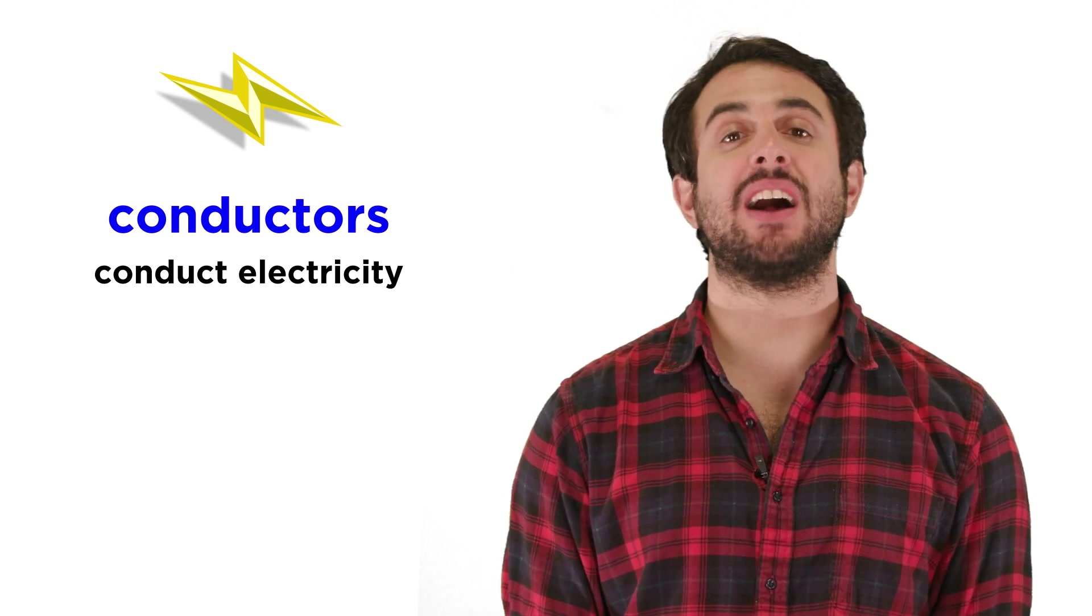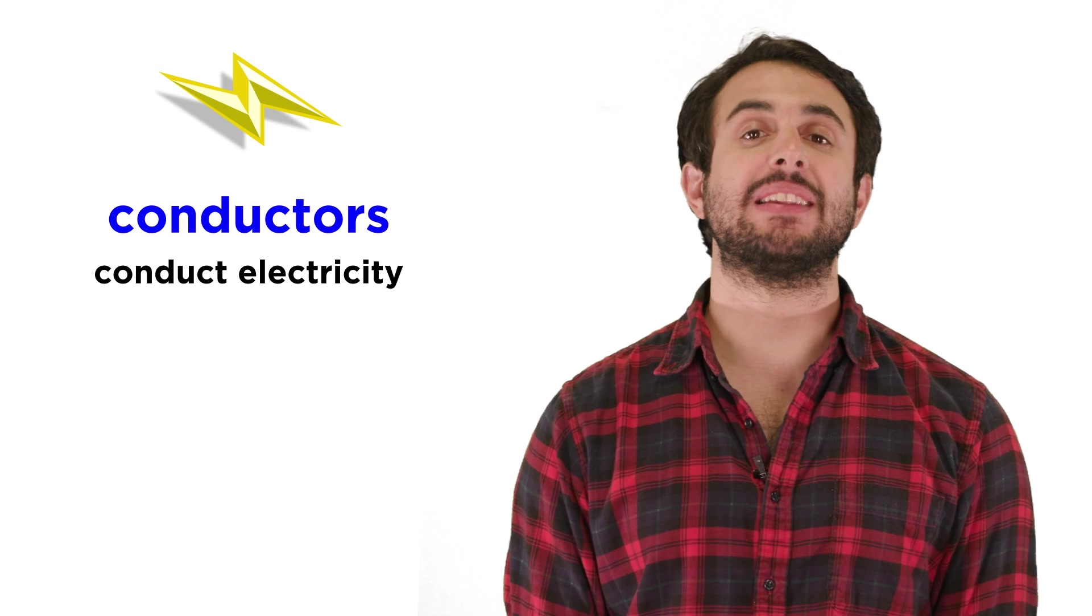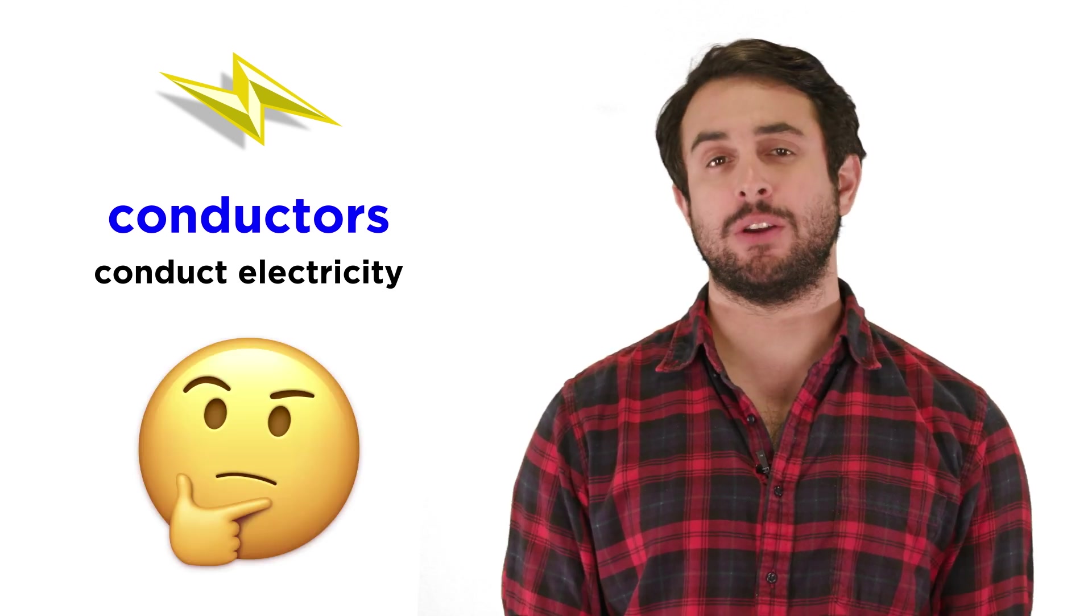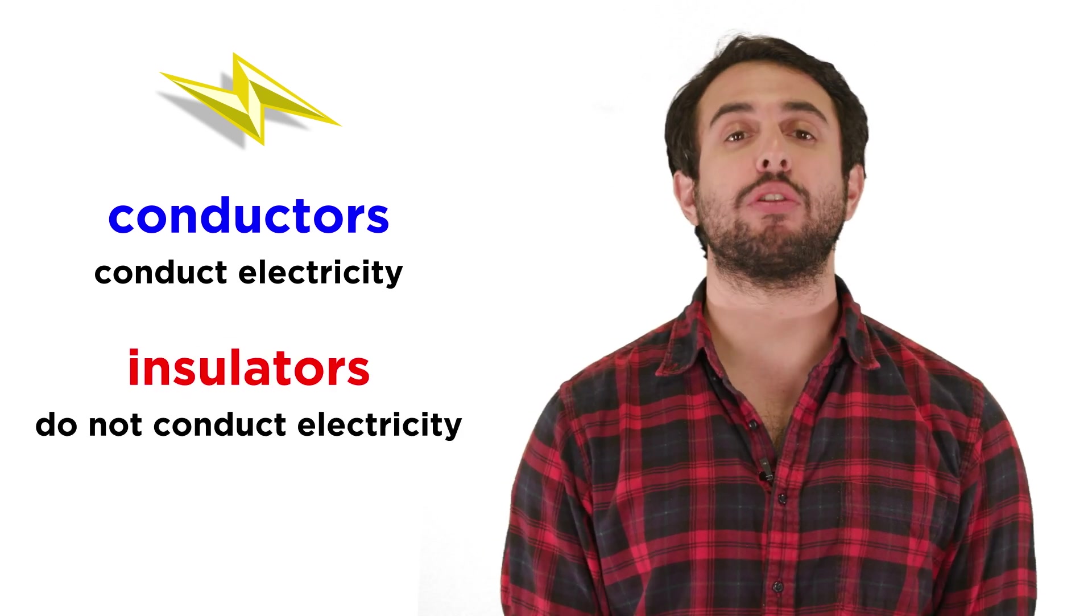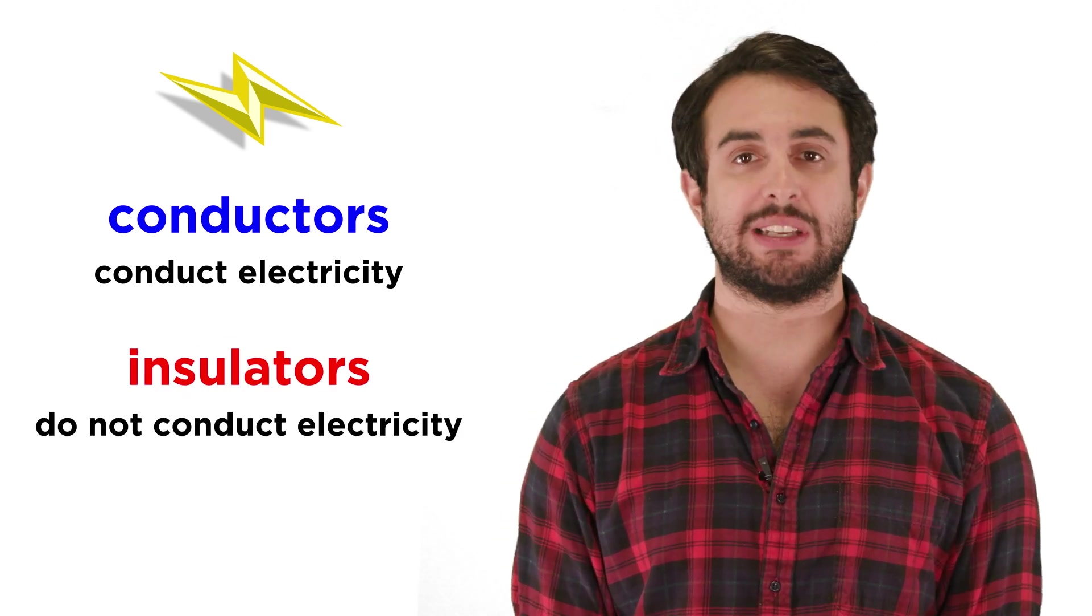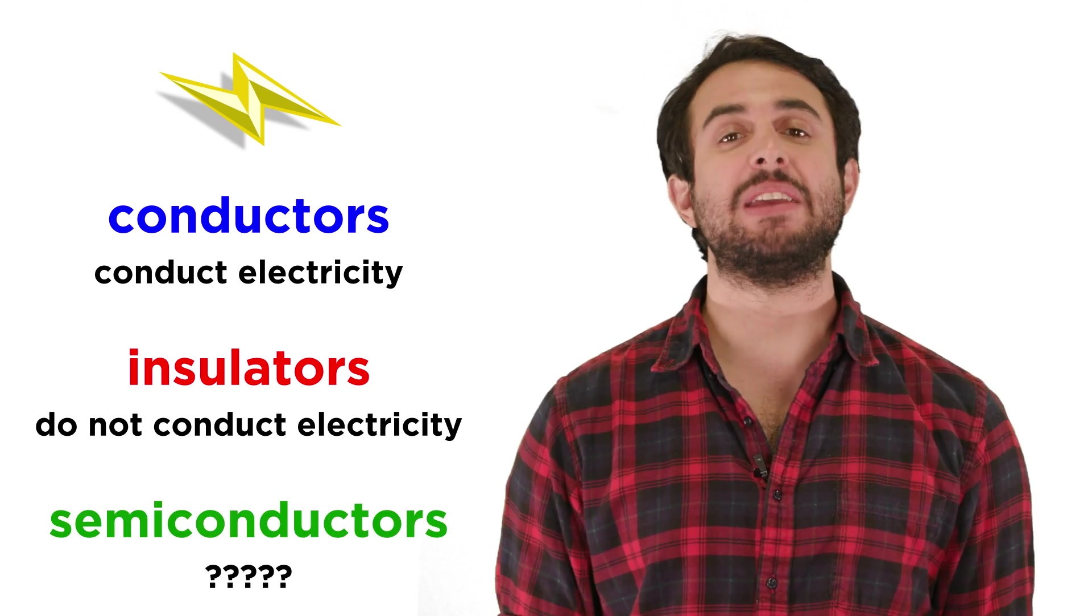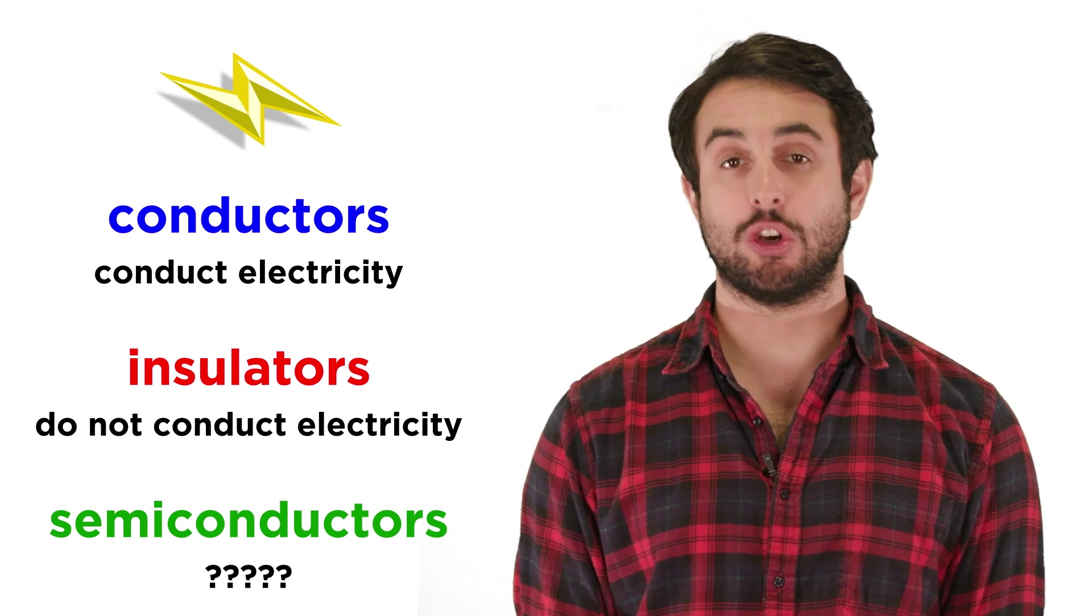Much of our technology relies on substances that can conduct electricity, meaning they allow the flow of an electrical current. But what is it about a material that allows it to do this? Conversely, if insulators are things that do not conduct electricity, why is that the case? And finally, what are semiconductors and where do they fit in? Let's learn about all of these terms now.